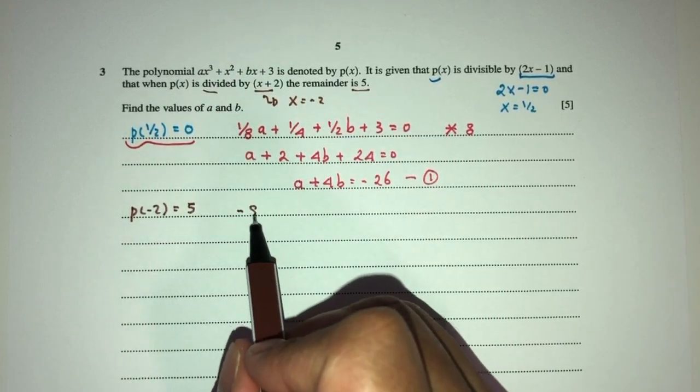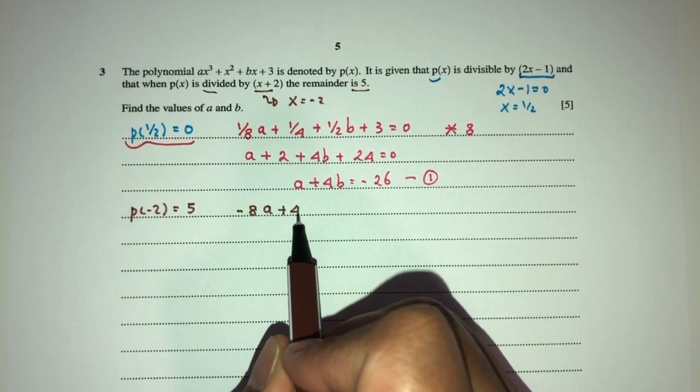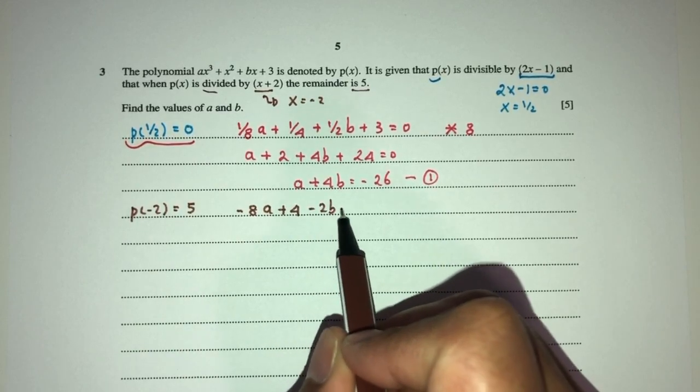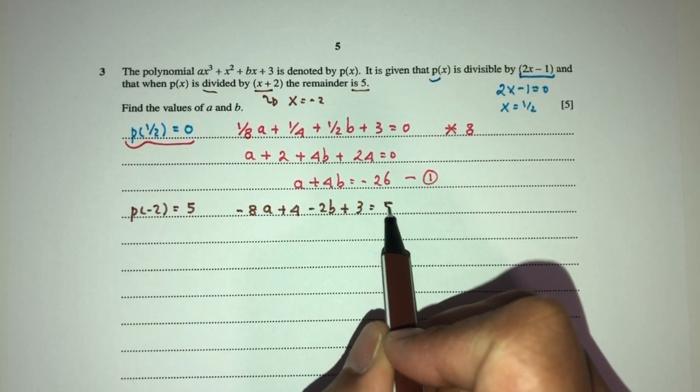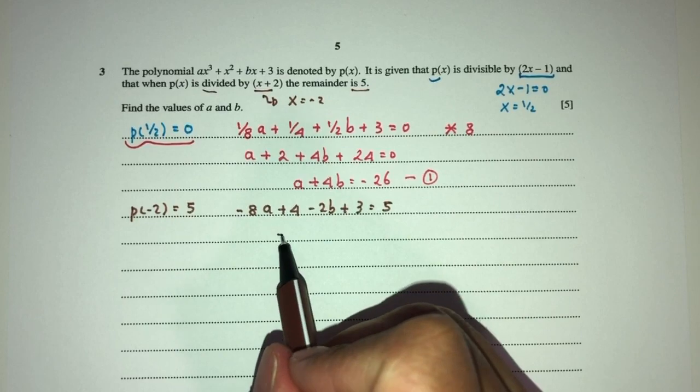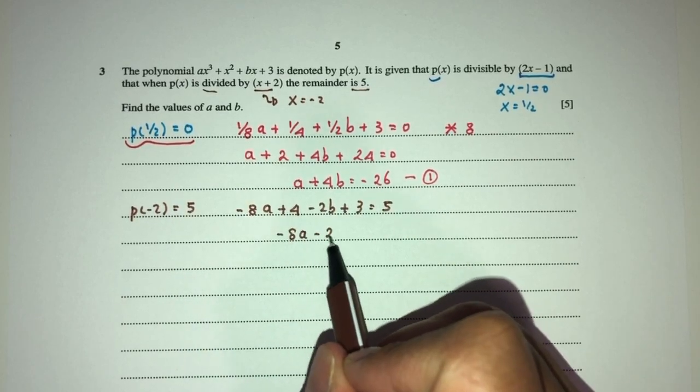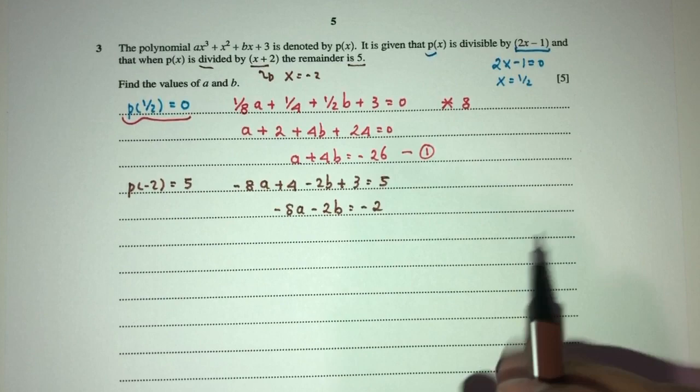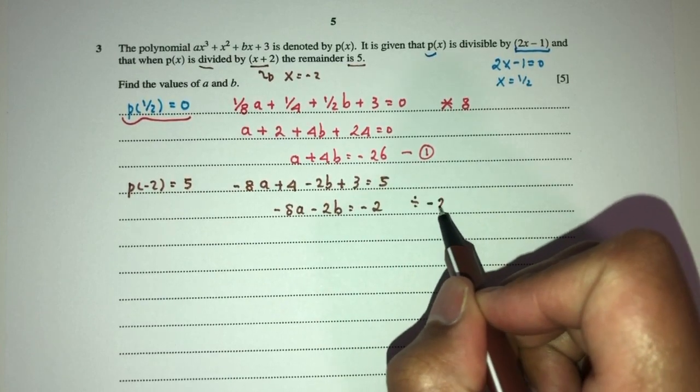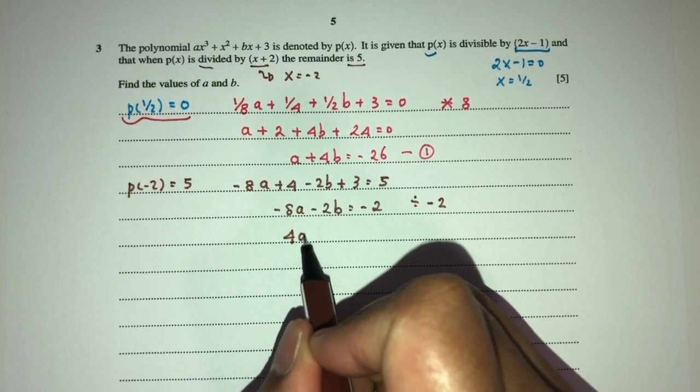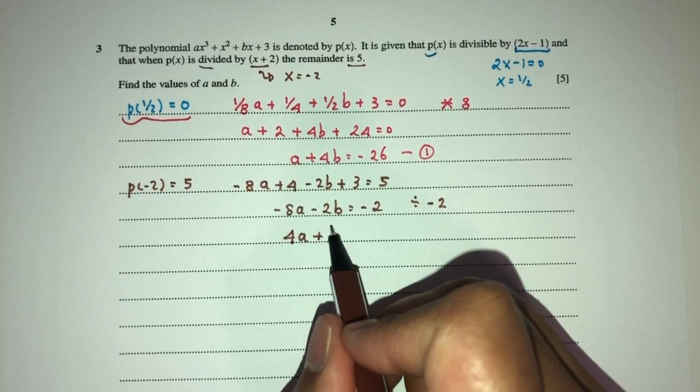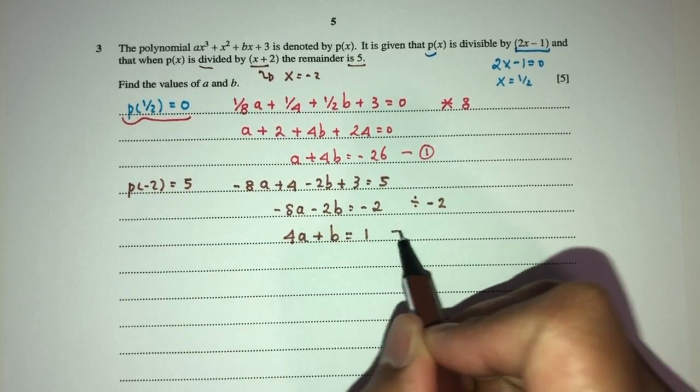Now form an equation, that will be minus 8a plus 4 minus 2b plus 3, that should be 5. Simplify, you have minus 8a minus 2b that will be minus 2. Now we can divide by minus 2 everywhere, that will become 4a plus b equal to 1, by equation number 2.